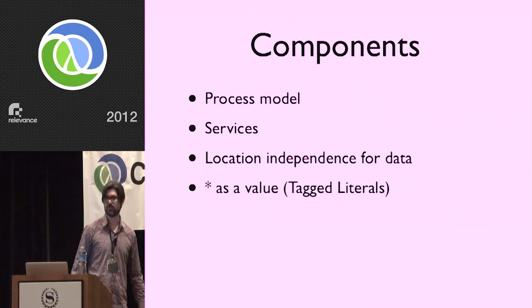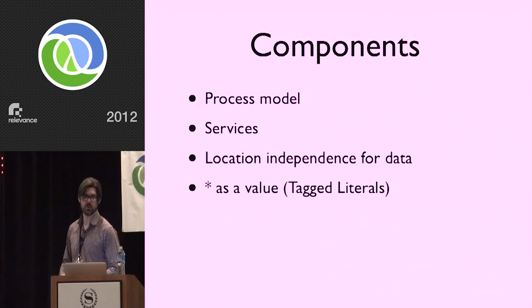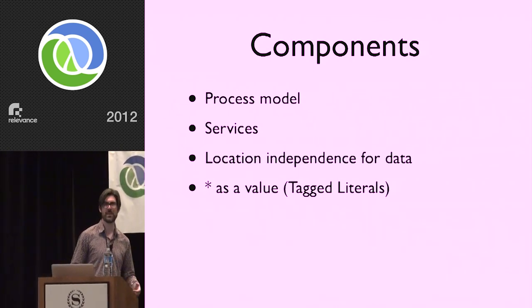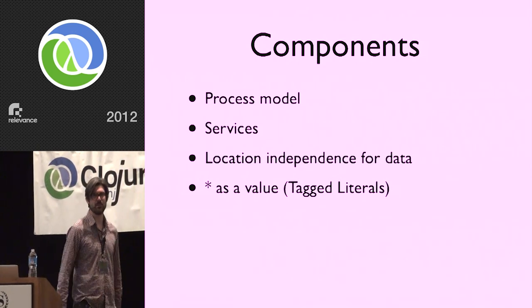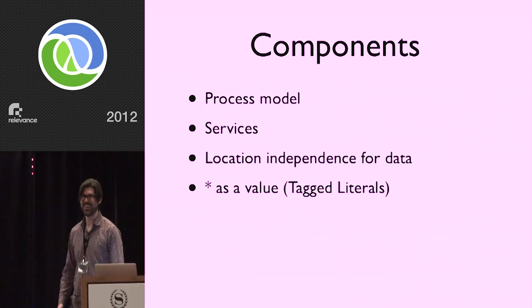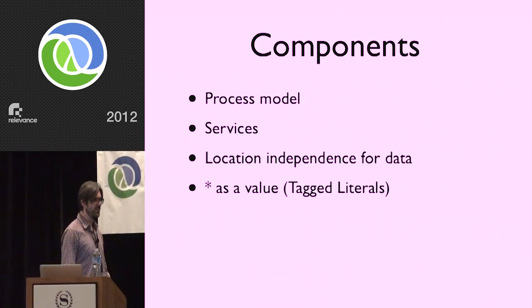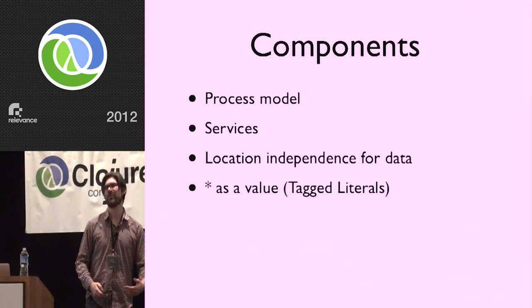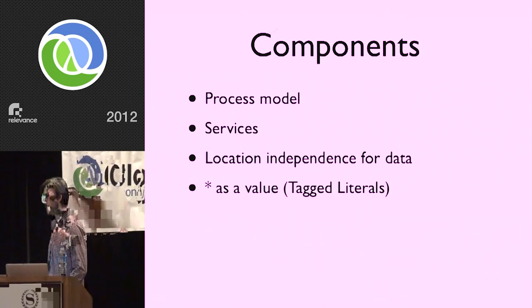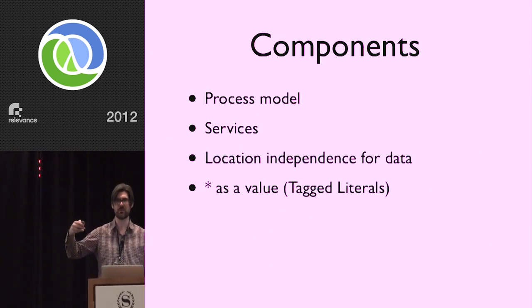The greater components of this architecture: there's this process model, which is very important. There are the services. We need to achieve location independence for data — this is very important. And we need to represent as many things as values as we possibly can. We need to push the boundaries of what can be a value. If the database can be a value — that's pretty shocking, the database as a value — then there should be a lot of other things we should be able to treat as values that right now are just blobs of imperative building up of stuff.